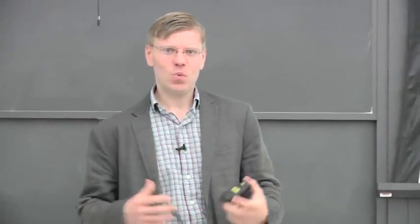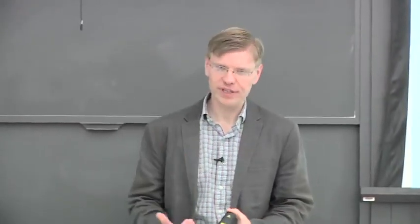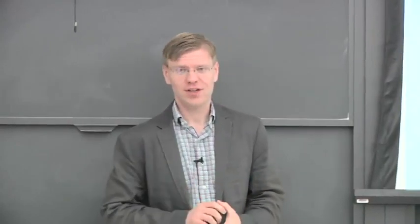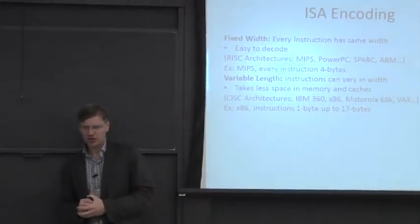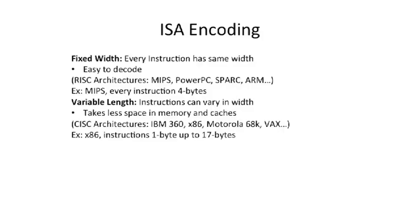One of the important things in ISA design is coming up with the encoding of different instructions. There's been a lot of debate on whether you should have fixed width versus variable width instructions. Most RISC architectures are fixed width — MIPS, PowerPC, SPARC, and ARM fall into this category. For example, every MIPS instruction is exactly four bytes long. What's nice about this is it's easy to decode, but it may not be very compact.